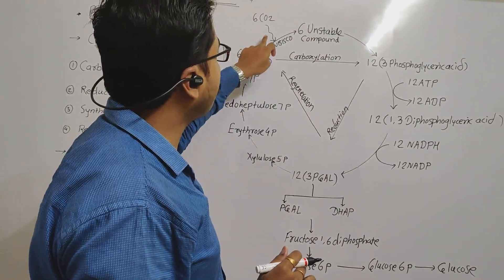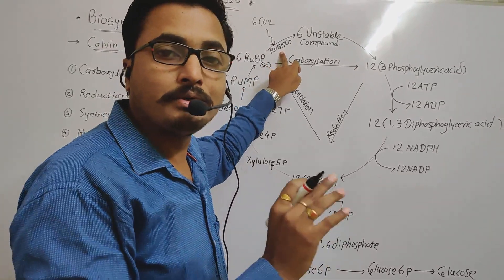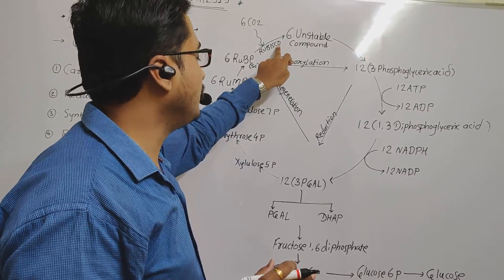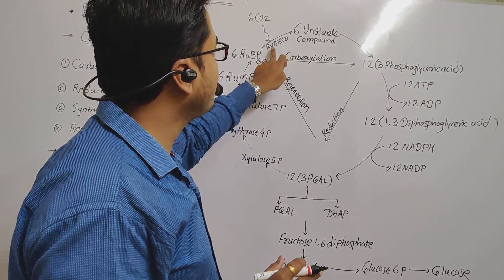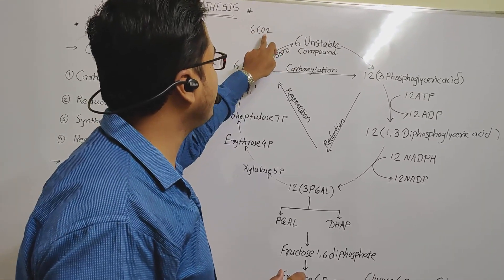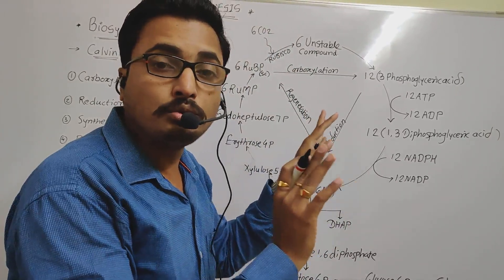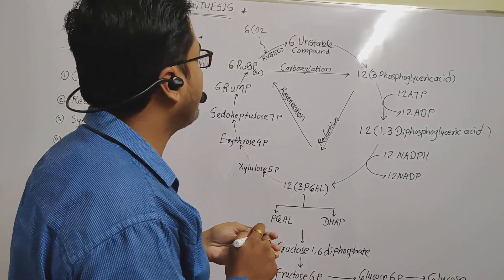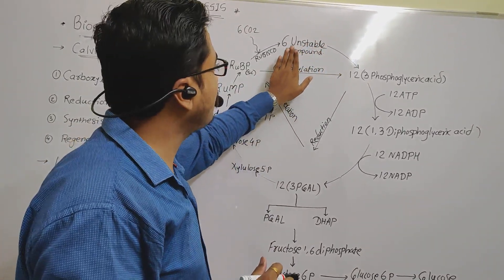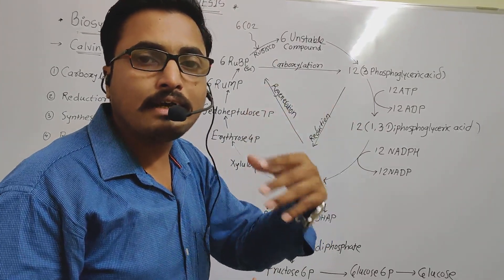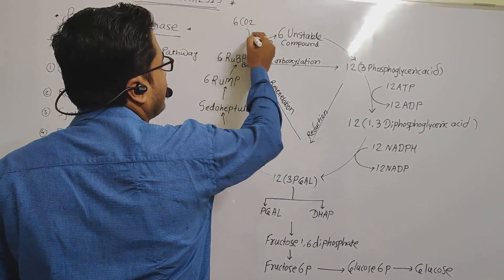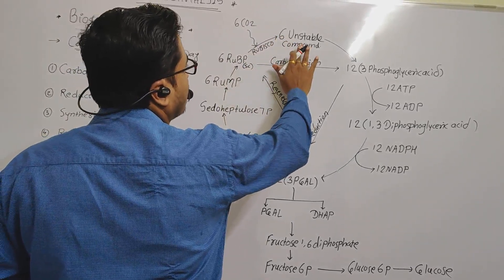After CO2 fixation by Rubisco, 6 unstable compounds are formed. These 6 unstable compounds each have 3 carbons. So we have 30 carbons from RuBP plus 6 carbons from CO2, giving 36 carbons total in the 6 unstable intermediate compounds formed during carboxylation.